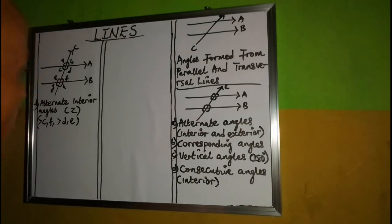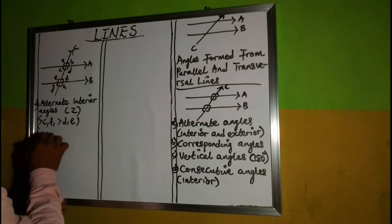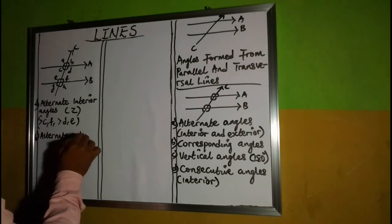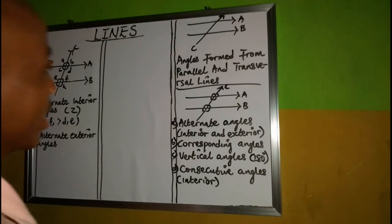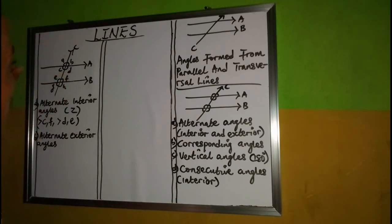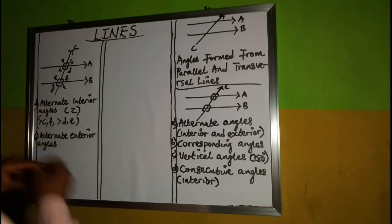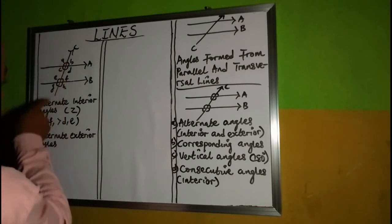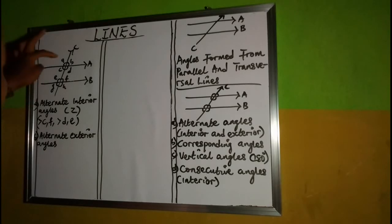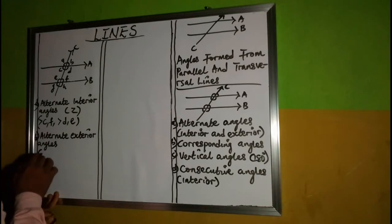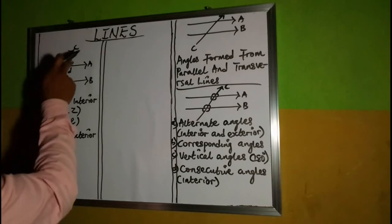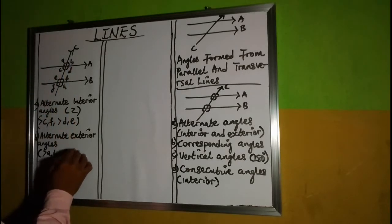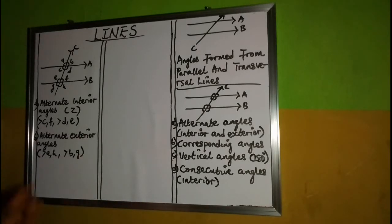Now for the alternate exterior angles — exterior simply means outside the parallel lines. So we focus on A, B, G, and H. We still have a Z form, but on the outside. The alternate exterior angles are: angle A and H, and angle B and G.